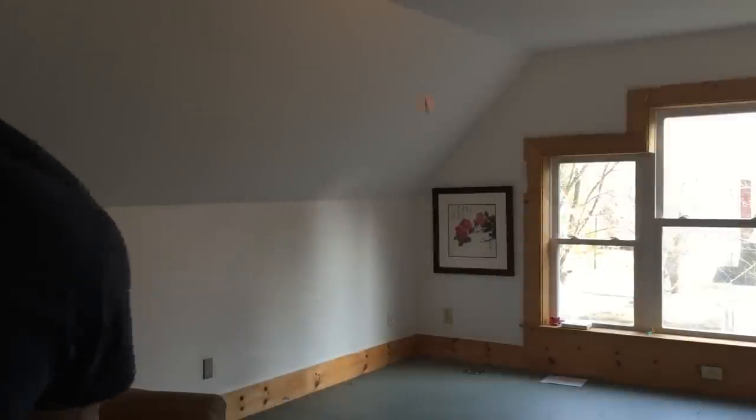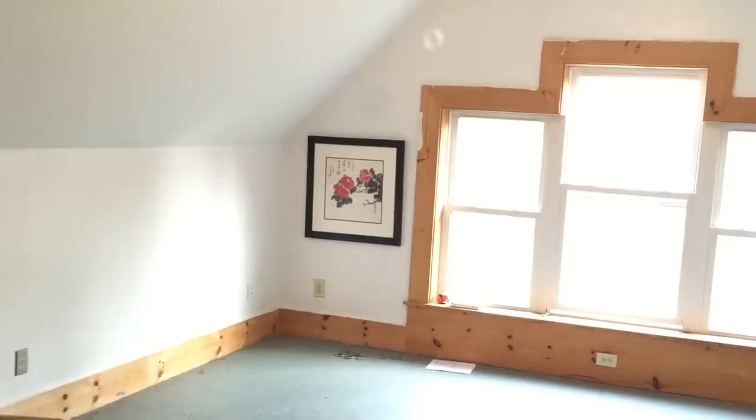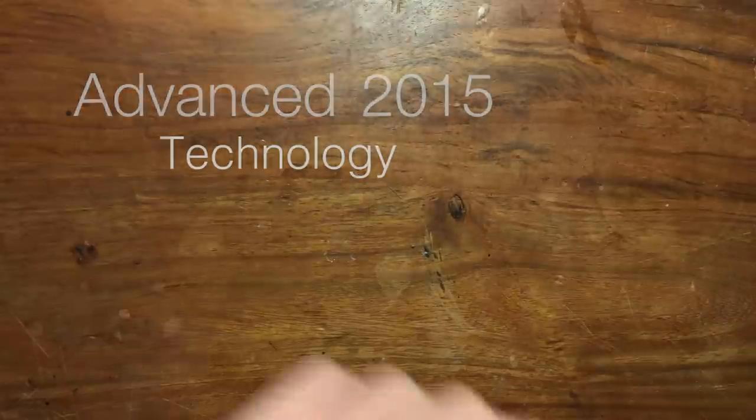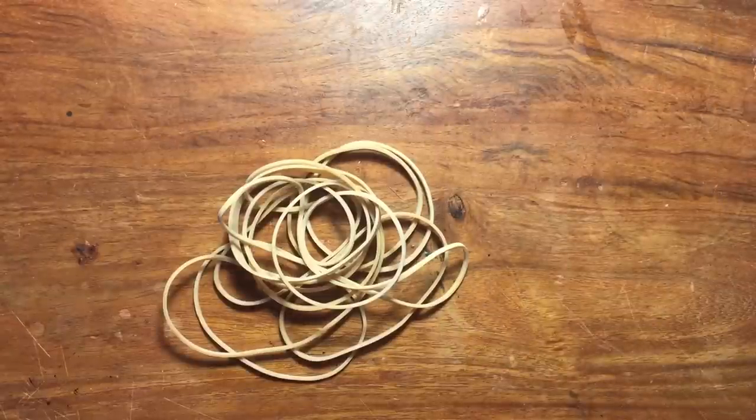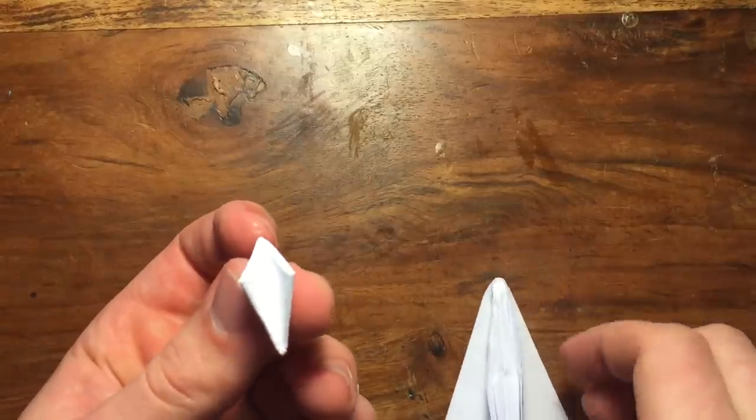Alright so far we have covered the basics with the classic airplane and a slightly different design. But it's 2015 and we have technology. That's right, rubber bands. They are going to take this fun to a whole new level. Alright, first let's make a paper plane slingshot.